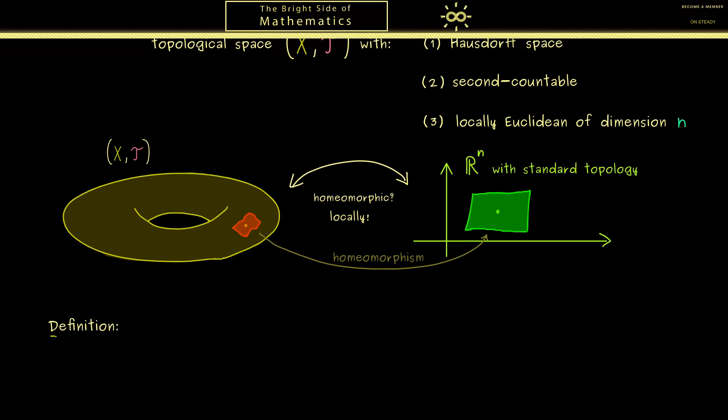So the following definition can hold for any topological space (X,T). And we call it locally Euclidean of dimension n if the following holds: For each point x of the set X, we find an open neighborhood.